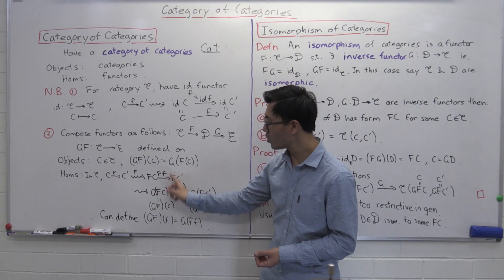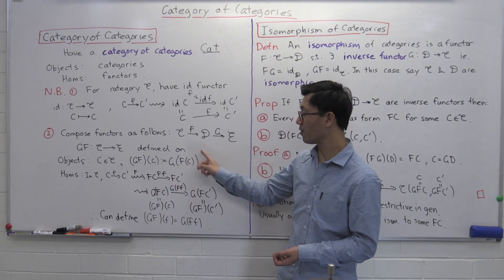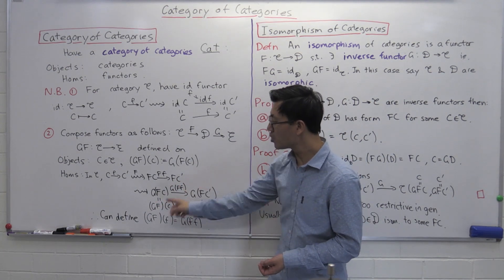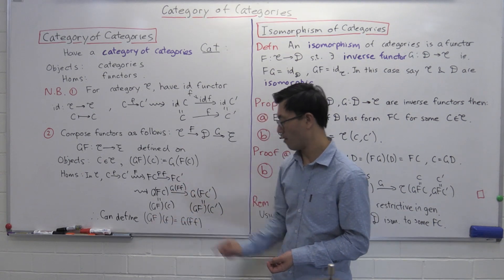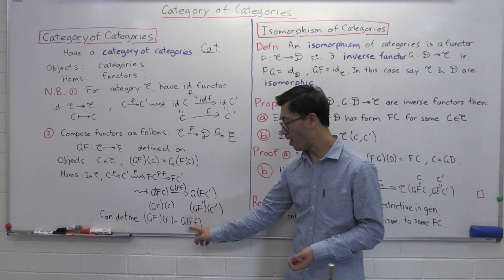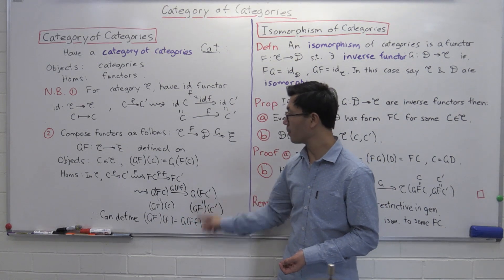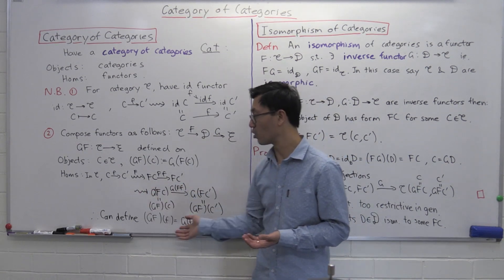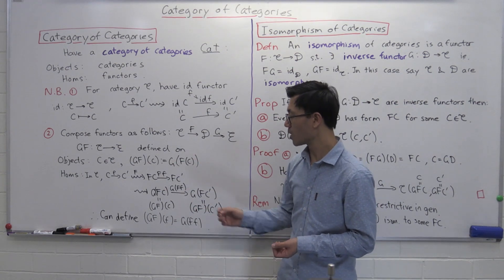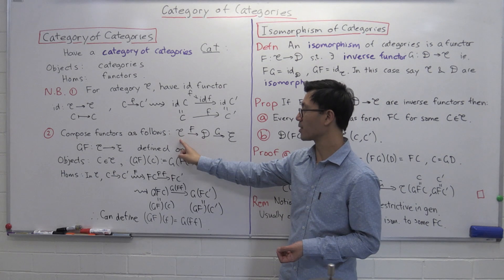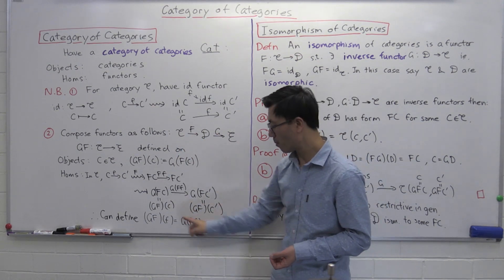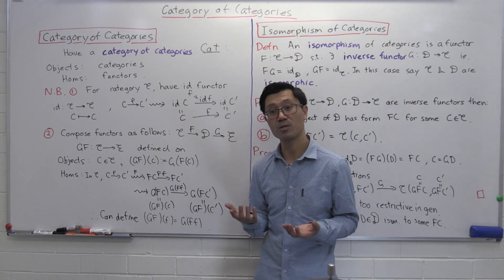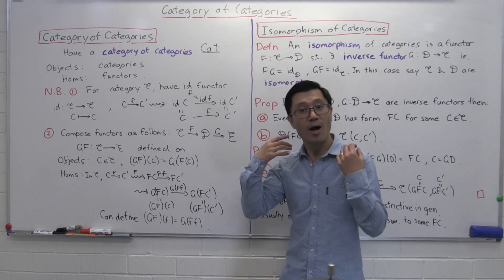By definition, GF of C and GF of C prime are the objects, so this gives a Hom from GF of C to GF of C prime — that's the definition of GF of F. You apply F to the Hom first, then G, and that gives how GF acts on Homs. You can check this is functorial: it preserves identity and composition. The identity maps to identity through both F and G, and similarly for composition. In that way we've defined a category of categories.